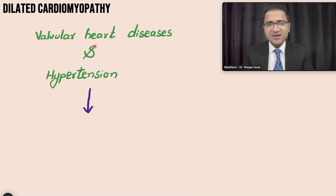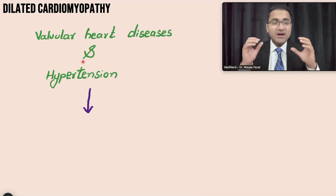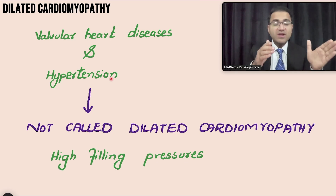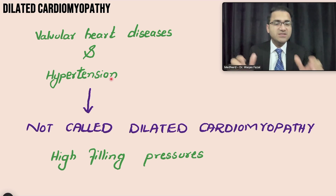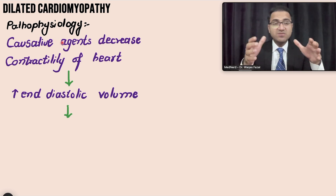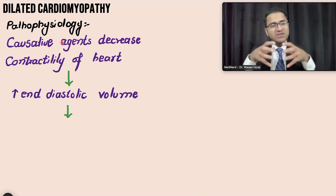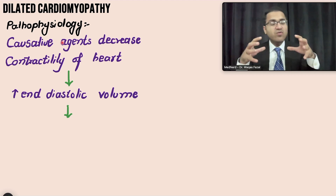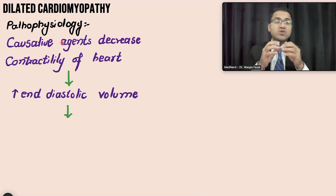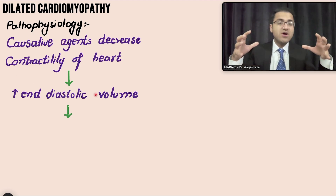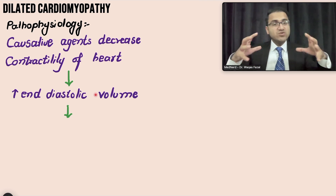If a patient has valvular heart disease or hypertension causing a dilated heart, that is not called dilated cardiomyopathy, because the dilation is due to known high filling pressures. Dilated cardiomyopathy develops without a history of cardiac disease. These drugs, toxins, or genetic factors cause a decrease in the contractility of the heart; blood accumulates because the heart cannot pump it out, and to accommodate the extra volume, the heart starts to dilate and end-diastolic volume increases.